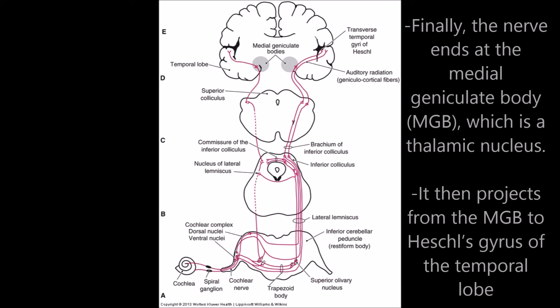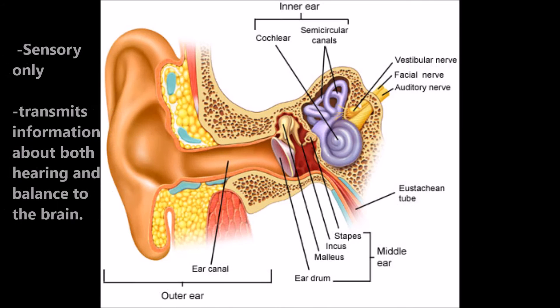Fibers from the superior olivary complex within the pons ascend to the lateral lemniscus and inferior colliculus. Finally, the nerve ends at the medial geniculate body, which is the thalamic nucleus. It then projects from the medial geniculate body to Heschl's gyrus of the temporal lobe.